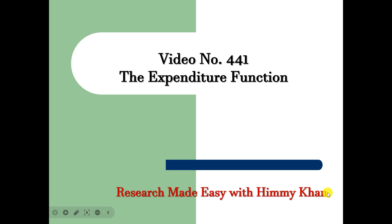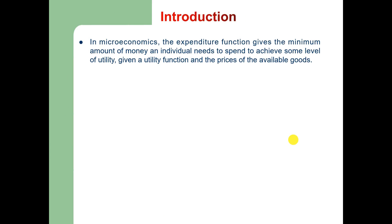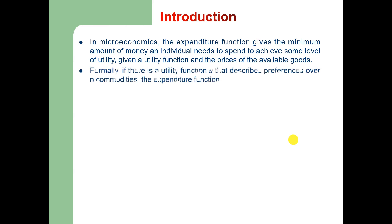Let me start with the definition of the expenditure function. In microeconomics, the expenditure function gives the minimum amount of money that an individual needs to spend to achieve some given level of utility, given a utility function and the prices of all the available goods.